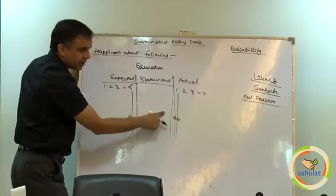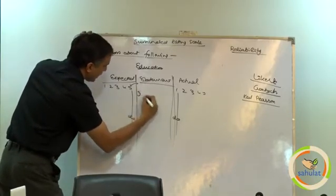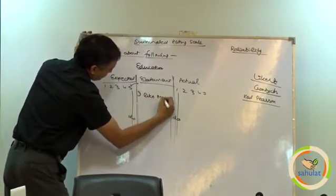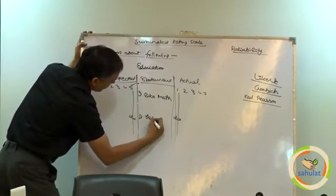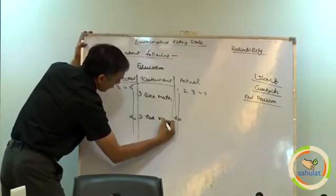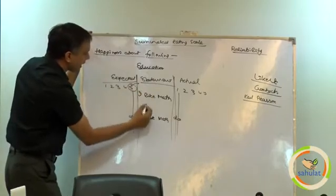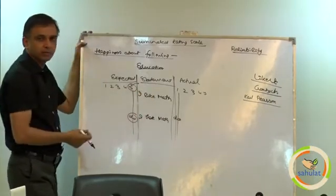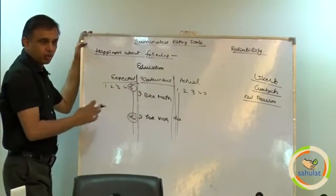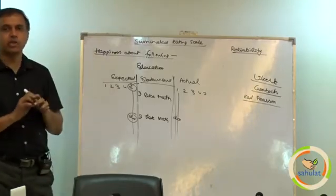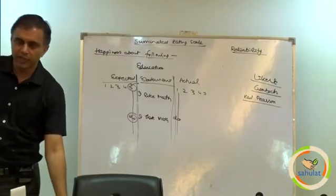So if you make certain things in reverse way - I like math somewhere, I hate math. I like math, strongly agree. I hate math, strongly agree. What is going on? You should ask it, and people of psychology do it extensively.